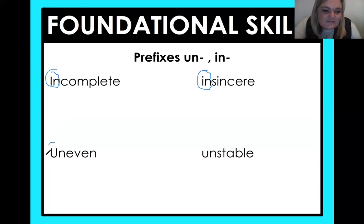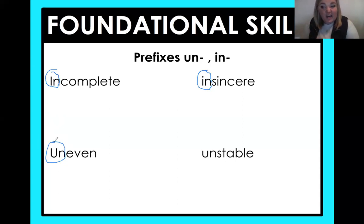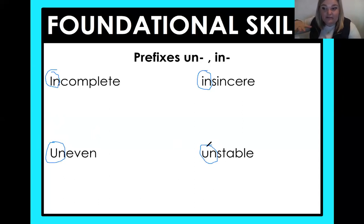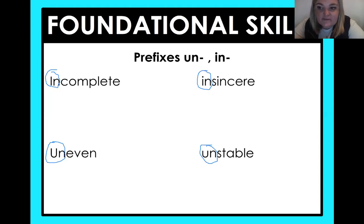What about 'uneven'? If something's even, we know that you have enough to give two people — you can put it into two groups. But if it's uneven, that means you can't split it into two groups; you're going to have one extra. What about 'unstable'? Think about it — a table is stable, it won't fall over. But if it breaks off a leg, it might be unstable — it's not balanced anymore. So an activity you might get is taking this prefix away, figuring out what that base word was, and figuring out how the word was changed by adding that prefix.